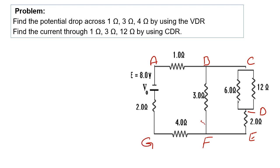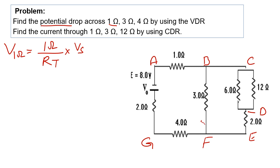e, f, and g. To find the potential drop across 1 ohm, we write the VDR formula: the potential drop across 1 ohm equals 1 ohm divided by the total resistance of the circuit, multiplied by the source voltage of 8 volts. But first we need to find the value of RT. This circuit has some resistors in series and some in parallel.